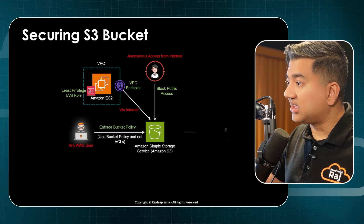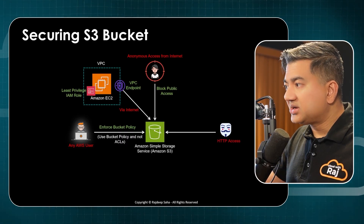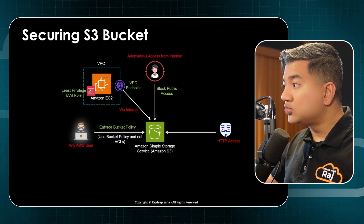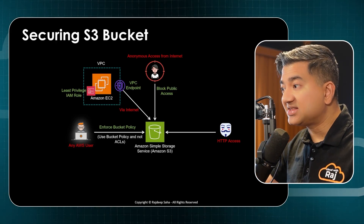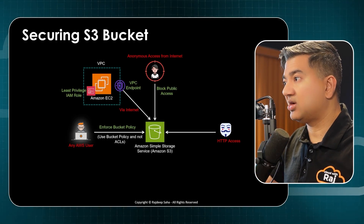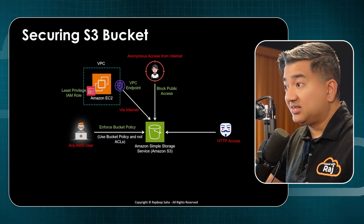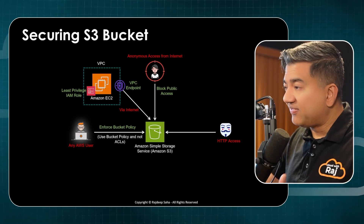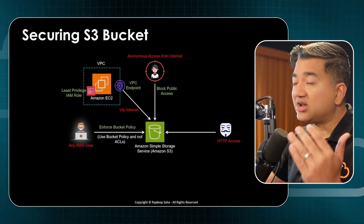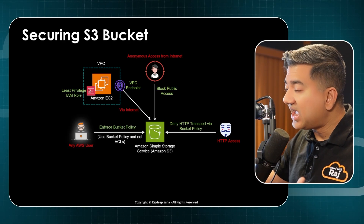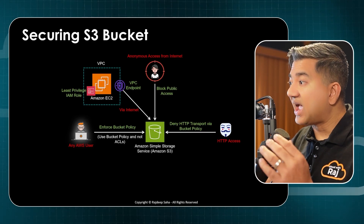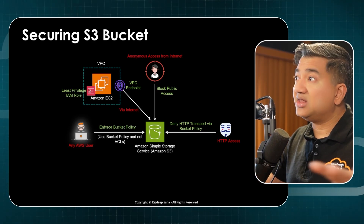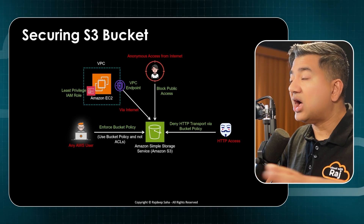Next, you do not want applications or other users to do HTTP access to your bucket objects. HTTP means there's no security layer, so traffic in transit will not be encrypted. You deny HTTP access via bucket policy — I'll show that in the demo.